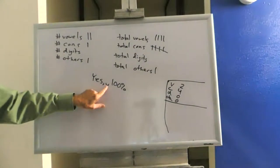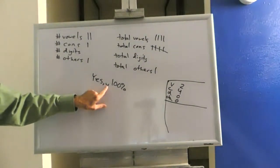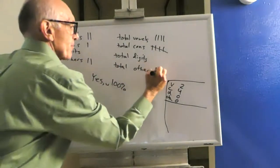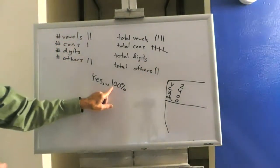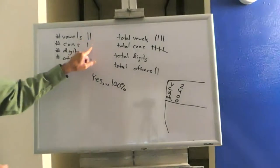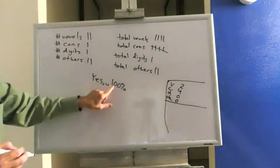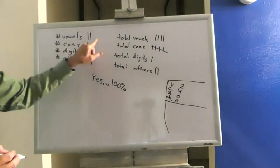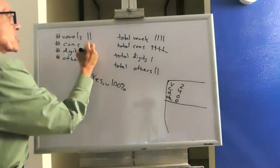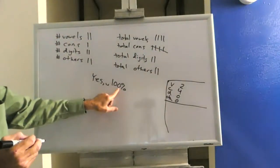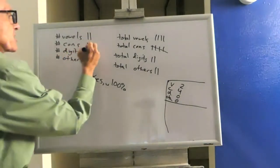Move on to the space. Spaces are characters. You can't just skip over them. Is the spacebar a vowel? Nope. Consonant? Nope. Digit? Nope. That means it's an other. Now I get to the one. One is not a vowel. Not a consonant. It is a digit. Zero. Not a vowel. Not a consonant. It is a digit. Zero. Not a vowel. Not a consonant. It is a digit.